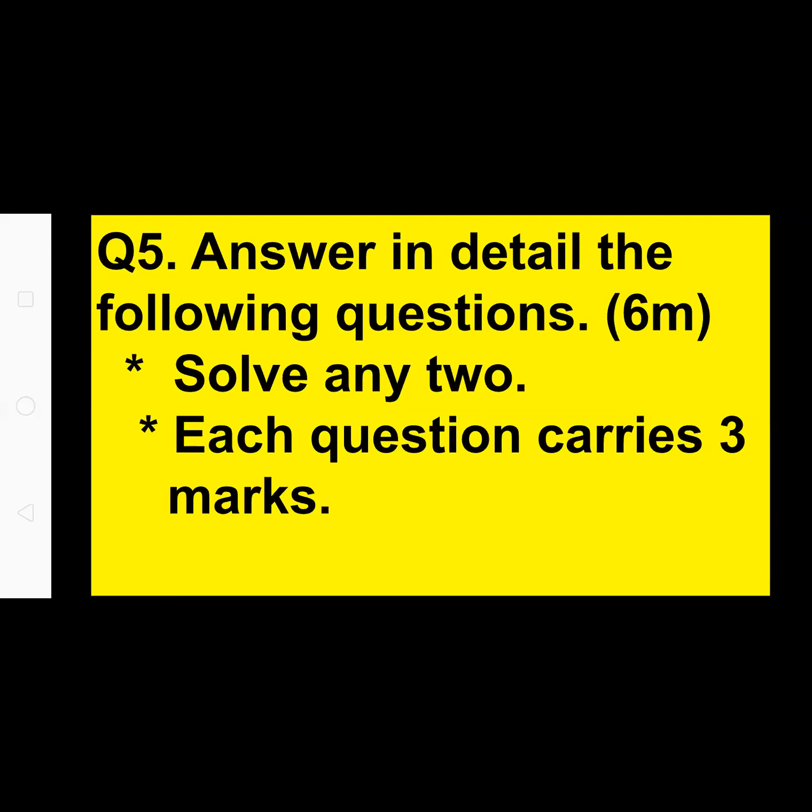Question eight: explain the following concept, any one. There are two questions and you have to solve any one for two marks, meaning at least four points. In the B part, there is a graphical representation and you have to do any one. Question nine: answer the following question in brief, any one for two marks — at least four points. Now let us start with some examples.